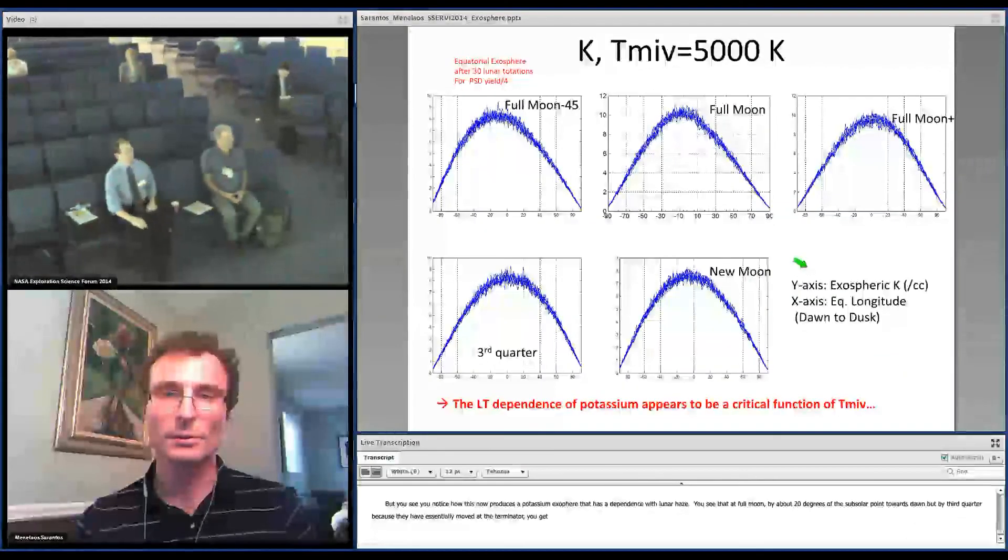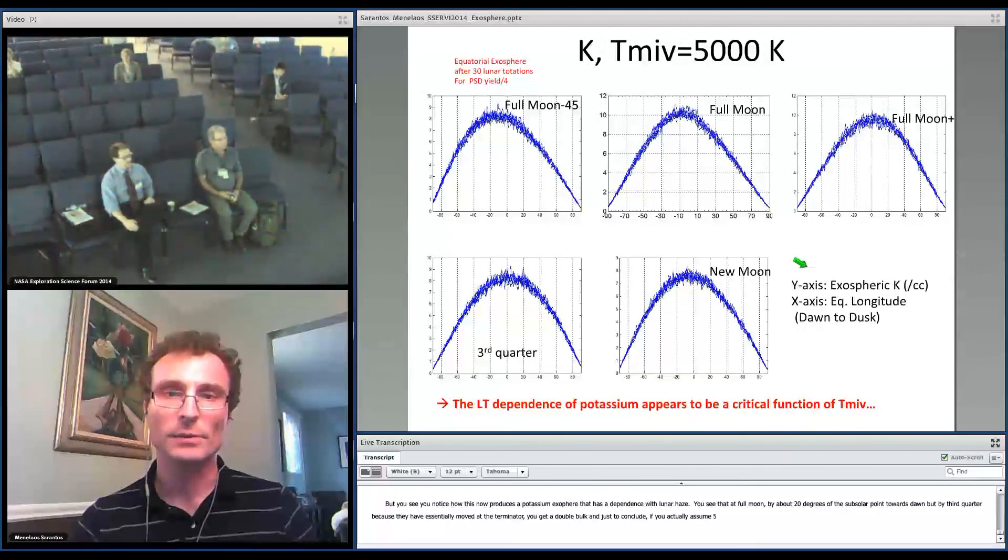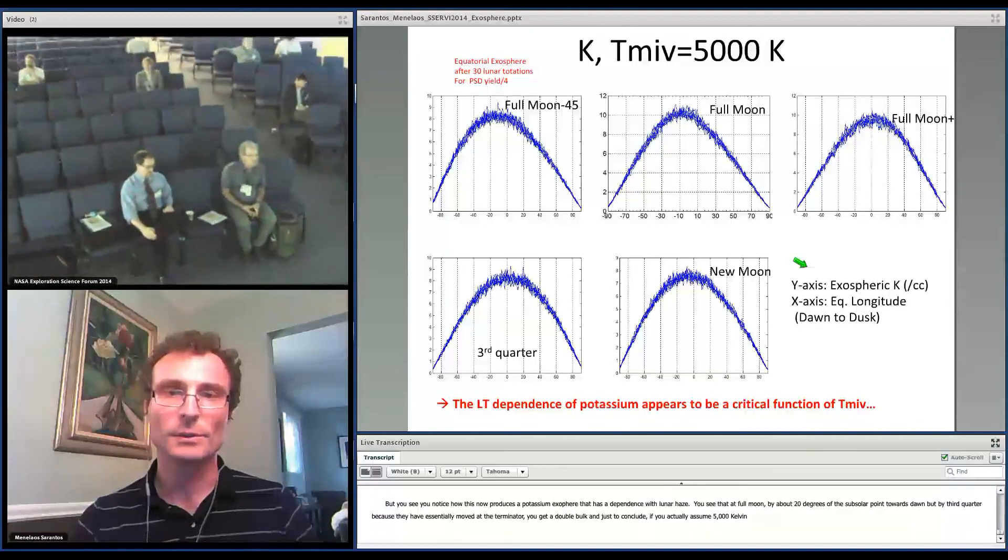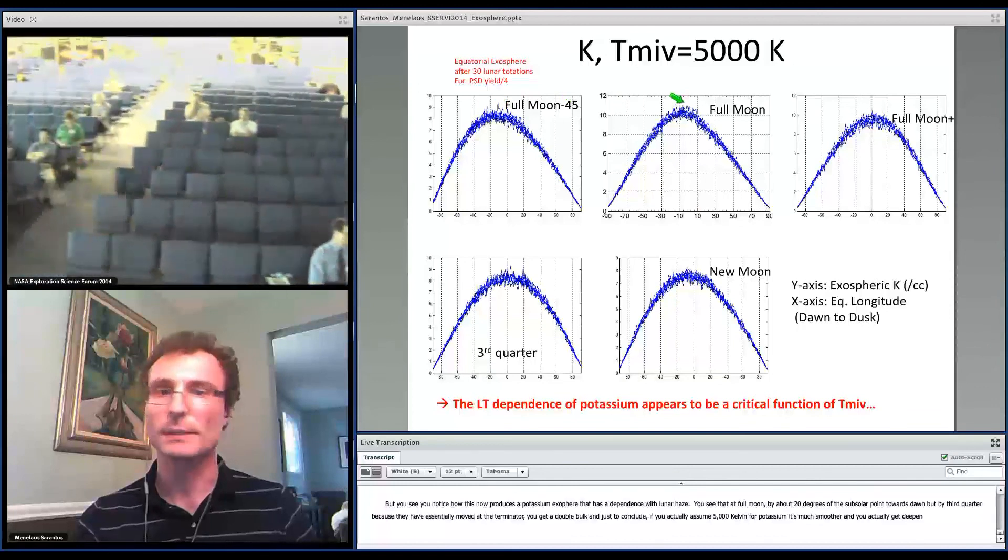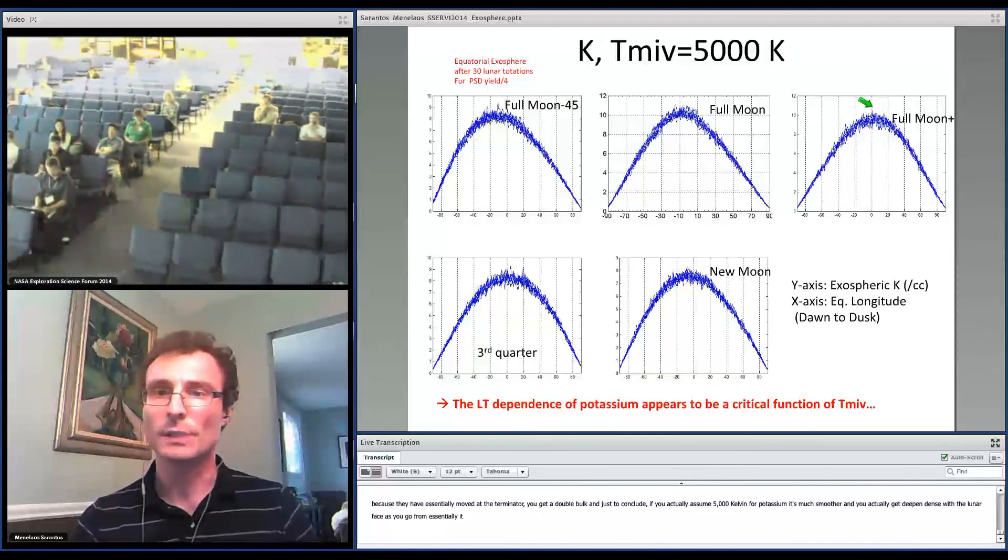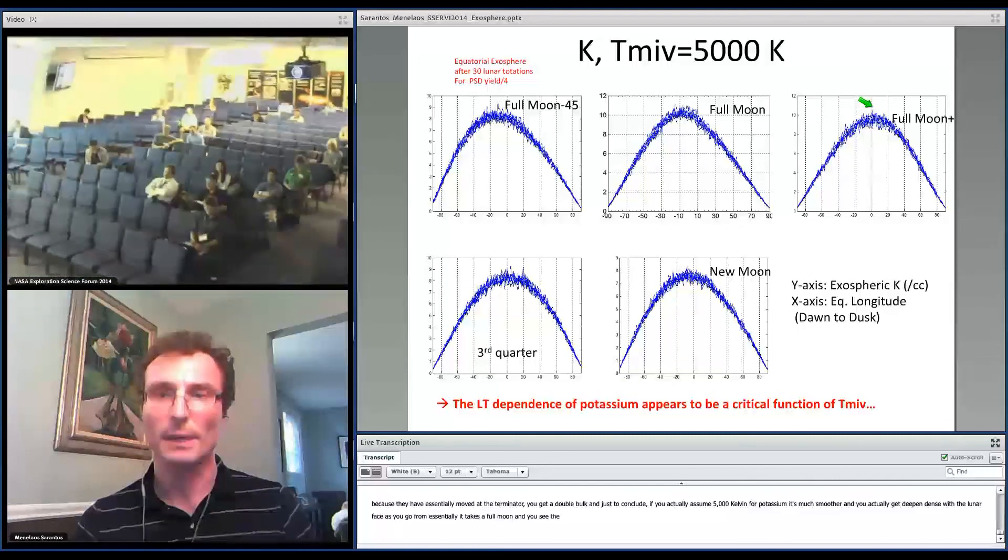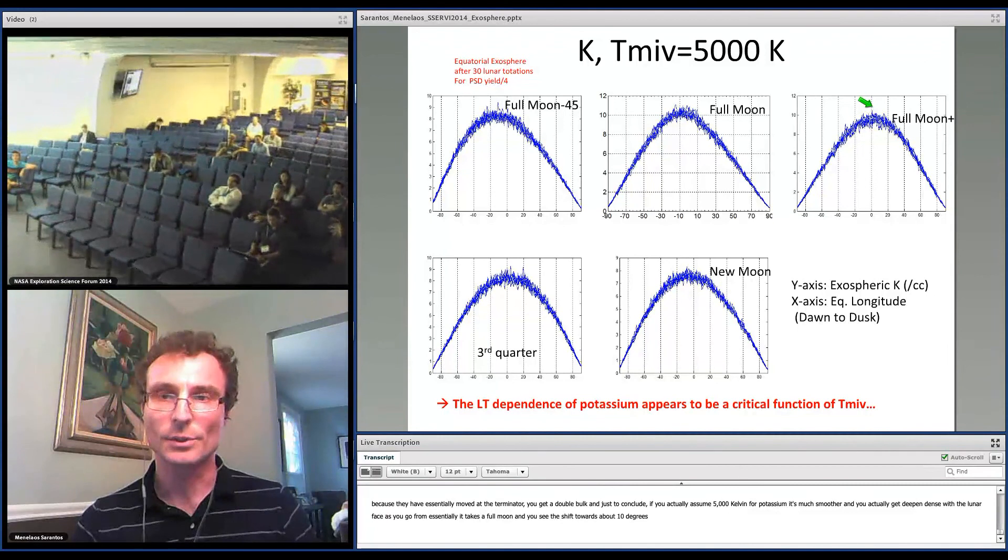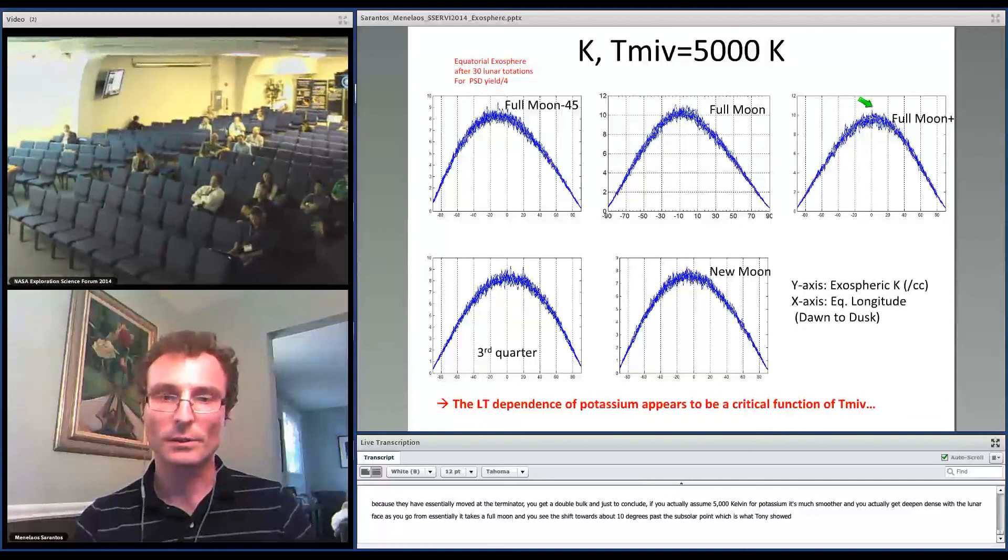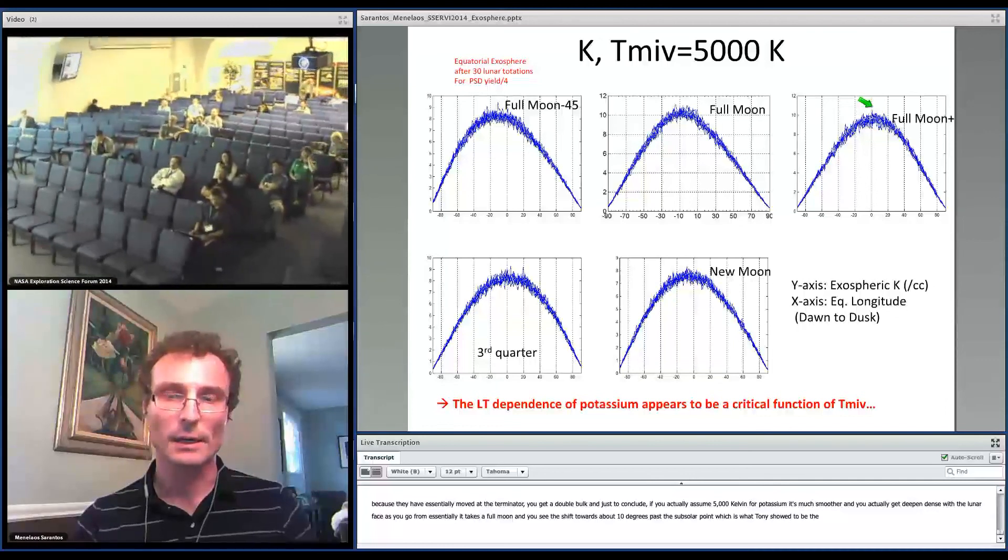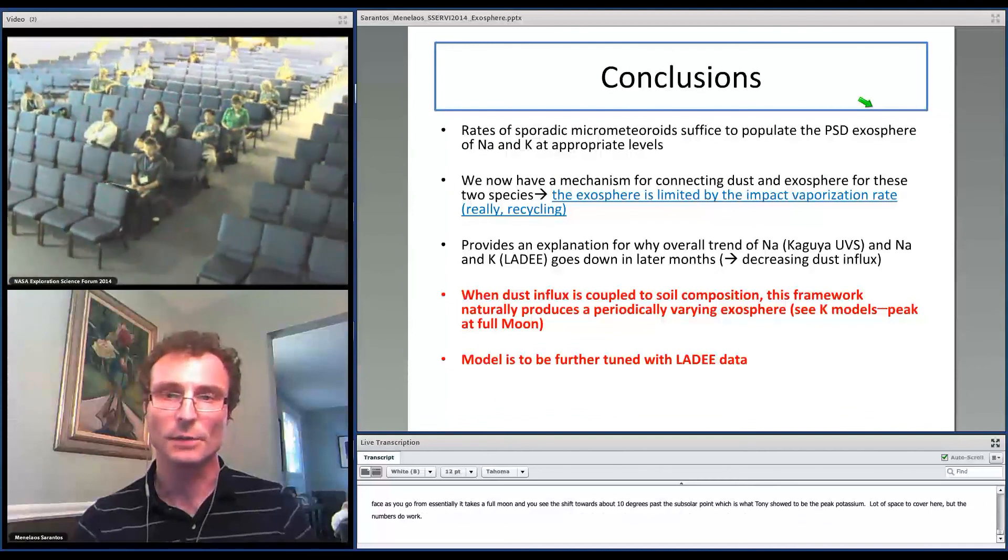And just to conclude, if you actually assume 5,000 Kelvin for potassium, it's actually a much smoother dependence. You still get dependence with lunar phase, and you see the shift towards about 10 degrees past the subsolar point, which is what the data showed. So there's a lot of parameter space to cover here, but the numbers do work. It's just a matter of using some data to tune them off.